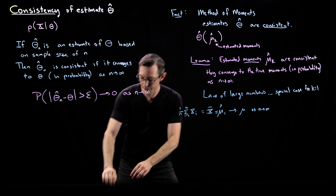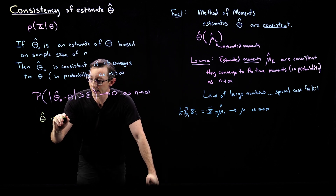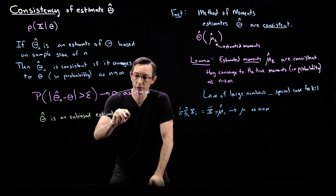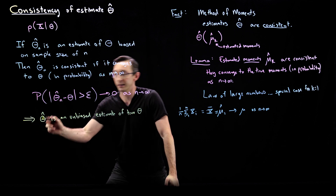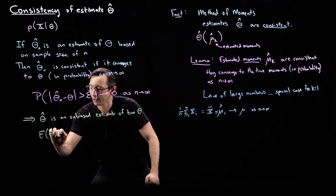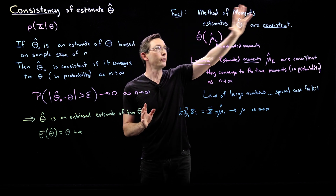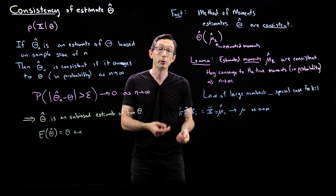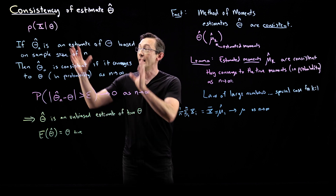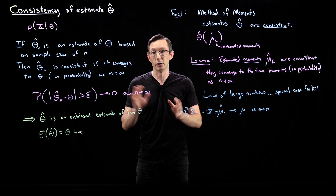Last point: consistency essentially means that theta hat is an unbiased estimator of the true theta — that the expected value of theta hat equals theta true. It's also true for the maximum likelihood estimate, which we'll be talking about soon. The maximum likelihood estimate is also a consistent, unbiased estimate of the true parameter values. So it's really useful, and it's related to the law of large numbers and things we've looked at before.